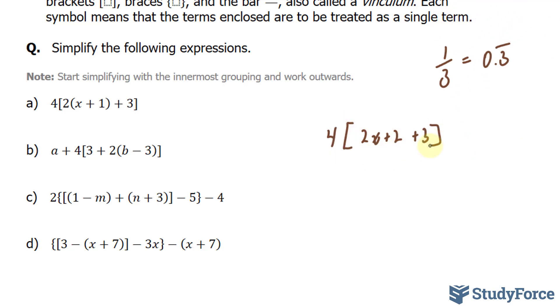Now we'll focus on the square brackets. We have 2x + 2 + 3. Since 2 and 3 are like terms, this gives us 4[2x + 5]. Now you can expand, and by expanding, the square brackets go away. This gives us 8x + 20. That's the answer to question A.